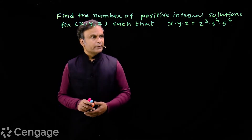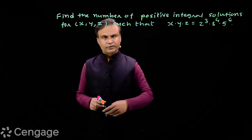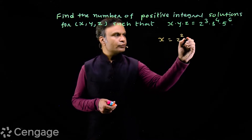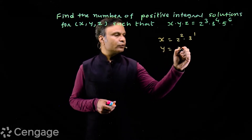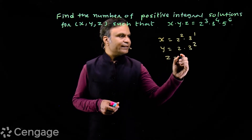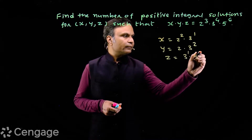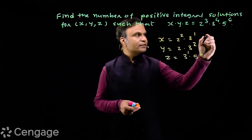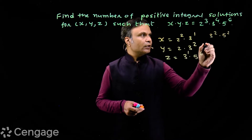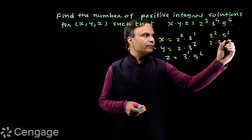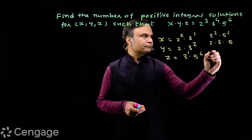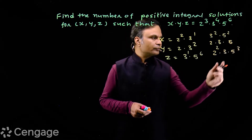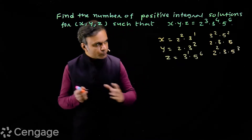What do we mean by positive integral solutions of this equation? We may have x = 2² × 3¹ and y = 2 × 3² and z = 3¹ × 5⁶ — this is one solution. We may also have x = 3² × 5², y = 2 × 3 × 5, and z = 2² × 3 × 5³ — this is another solution. We have so many solutions.